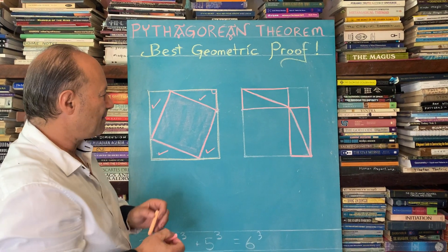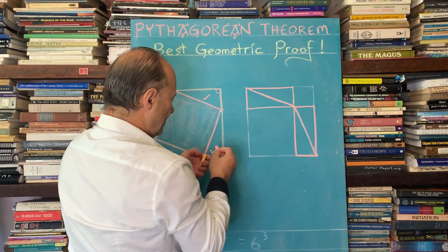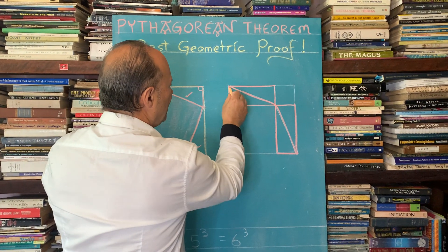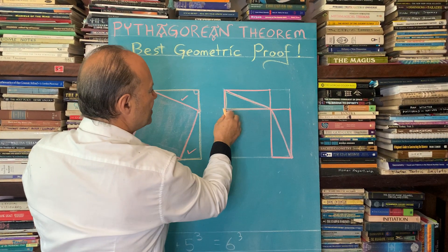But look what we've got. I'm going to shade in. If you have a look at this triangle here, you can see that this is the square.